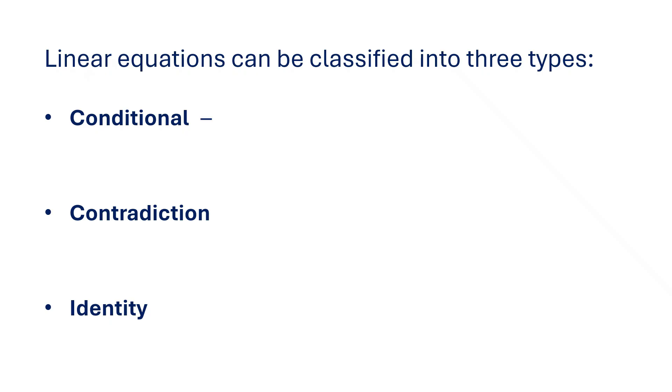A conditional equation is true for only one value of the variable. It works just for one number. That means it has exactly one solution. This is the type you are most used to.